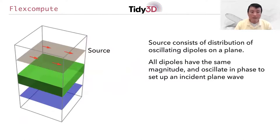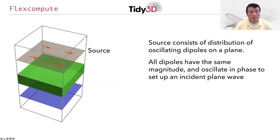Now let me comment on the source. The source is used to excite the electromagnetic field inside the computational domain. In the FDTD simulation, it consists of a distribution of oscillating dipoles on a plane. We have all the dipoles with the same magnitude and oscillating in phase in order to set up an incident plane wave.